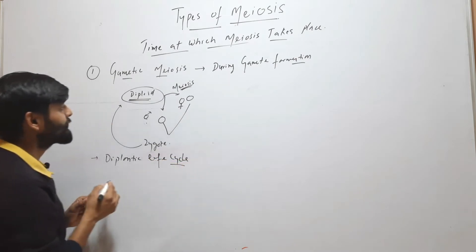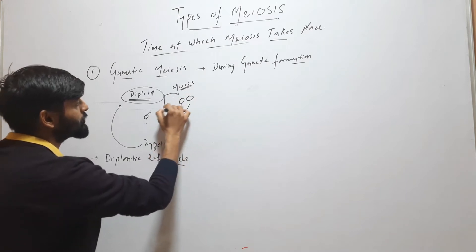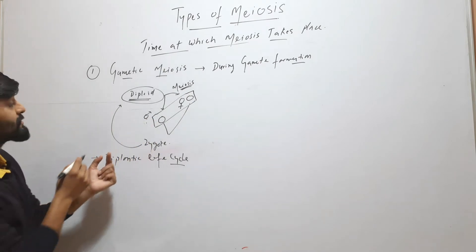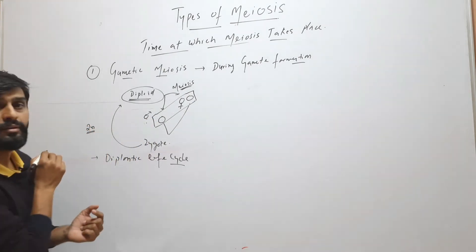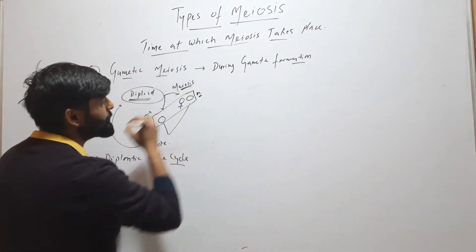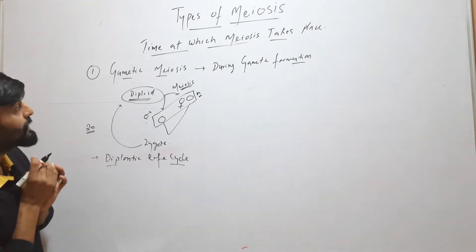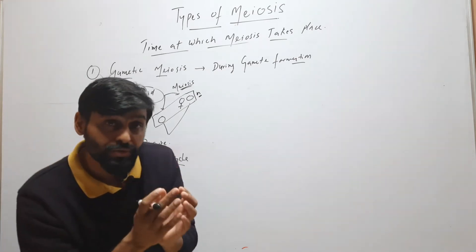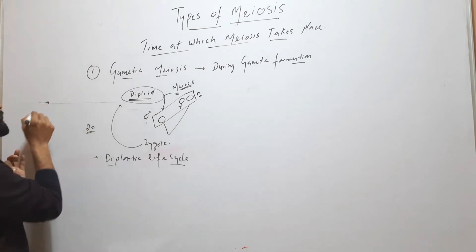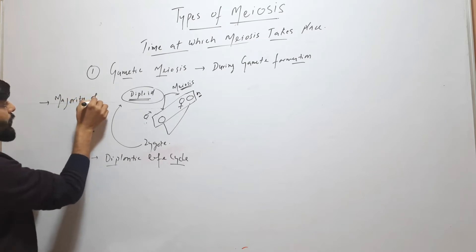Here you can see that except for the gametes, at all other stages there is a 2N (diploid) condition. Only at the time of gamete formation is there a haploid condition. So this type of life cycle is called a diplontic life cycle. Gametic meiosis is meiosis that occurs during gamete formation, and this type of meiosis is found in the majority of animals.